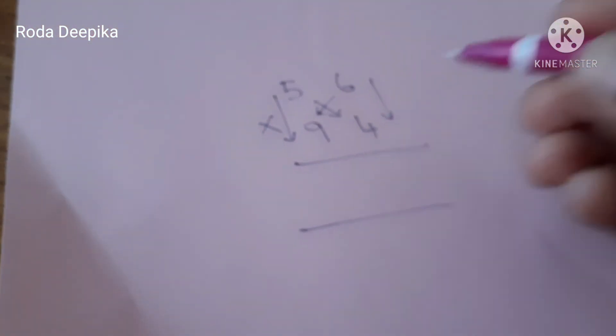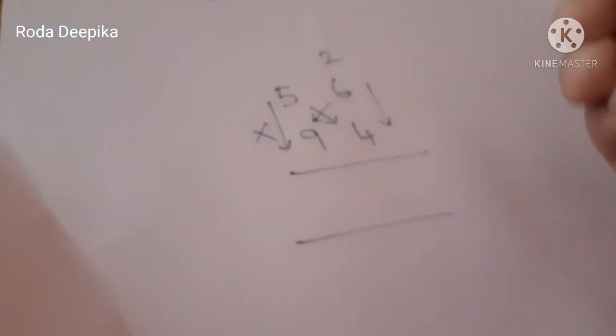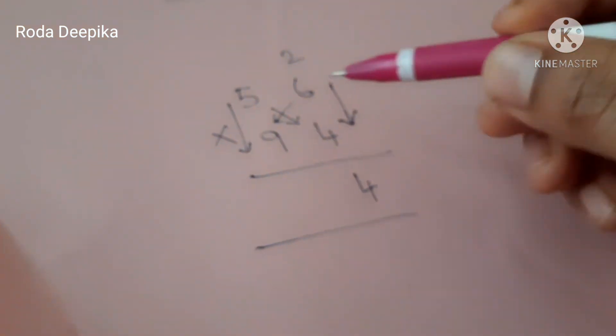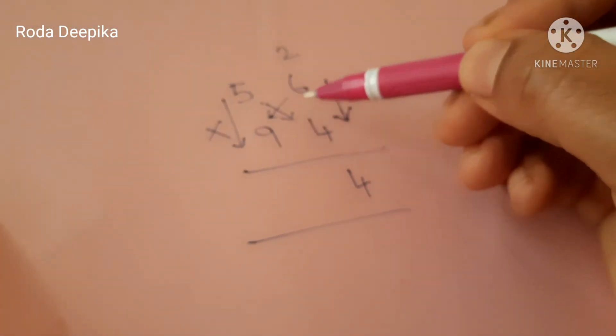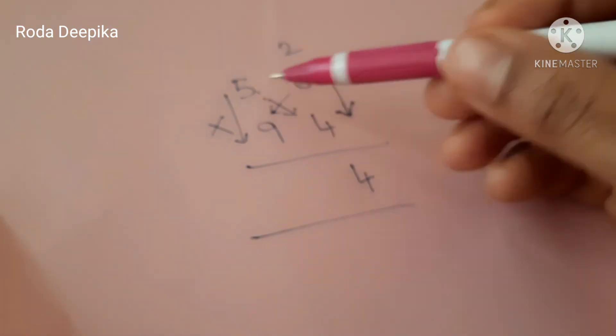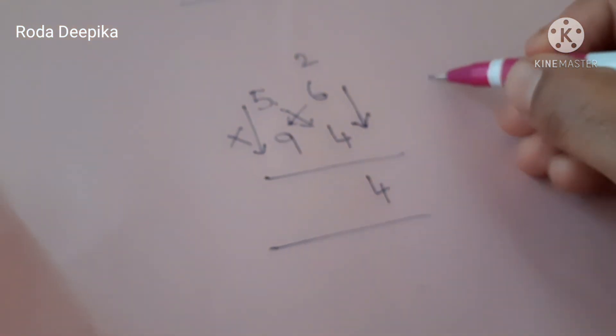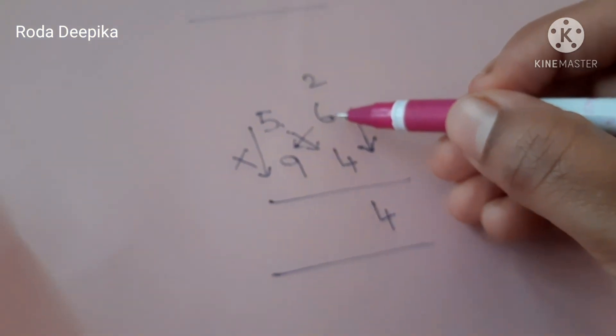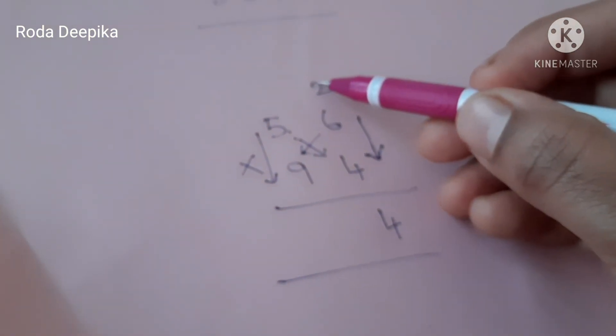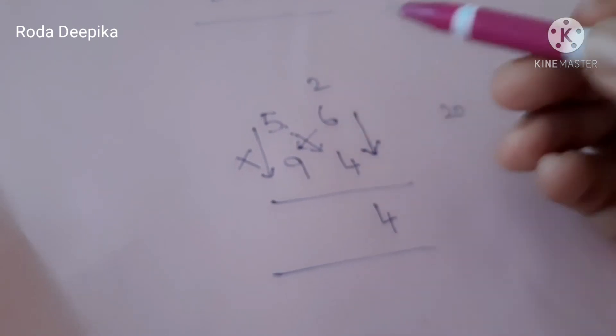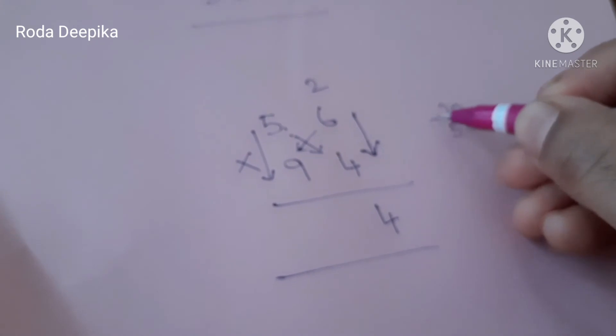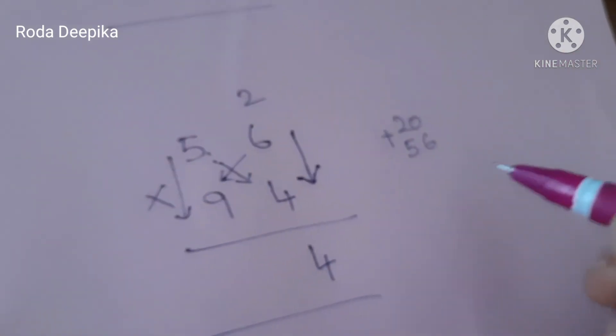First multiply the 1s digit 6, 4 are 24. Put 2 above and 4 below. Then cross multiply the numbers. 5, 4 are 20. Put 20 aside. 9, 6 are 54 plus 2, 56. So let us add 20 and 56. We get 76.